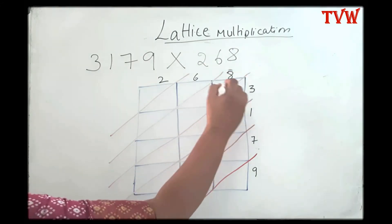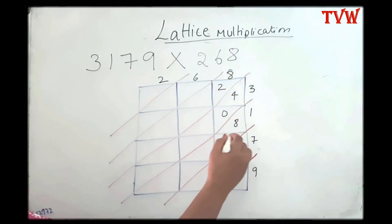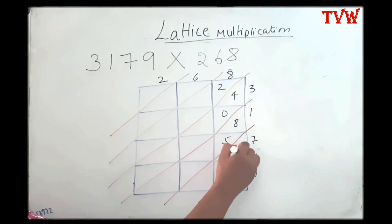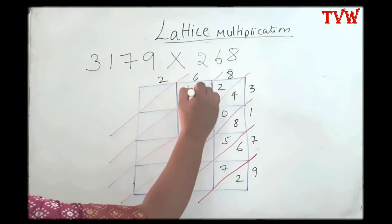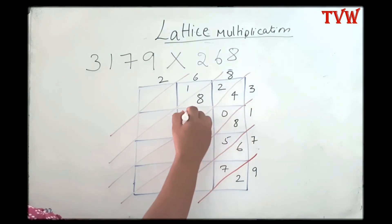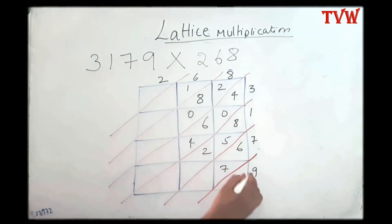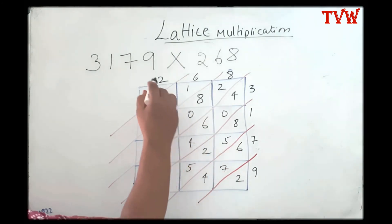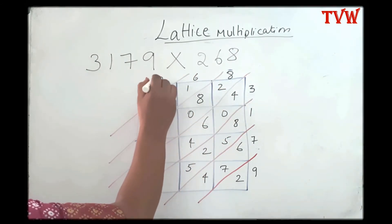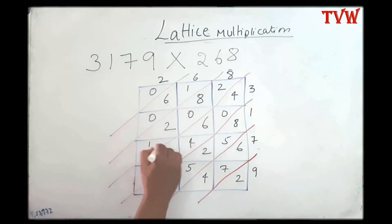Now let us start multiplying: eight threes are twenty-four, eight ones are eight, eight sevens are fifty-six, eight nines are seventy-two, six threes are eighteen, six ones are six, six sevens are forty-two, six nines are fifty-four, two threes are six, two ones are two, two sevens are fourteen, two nines are eighteen.